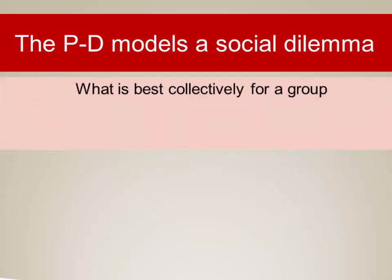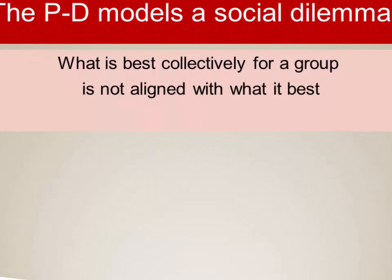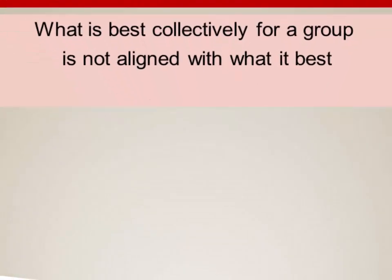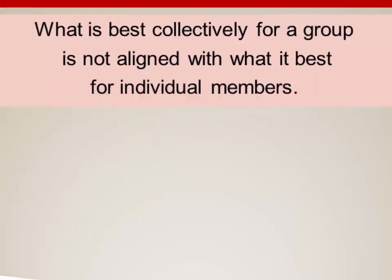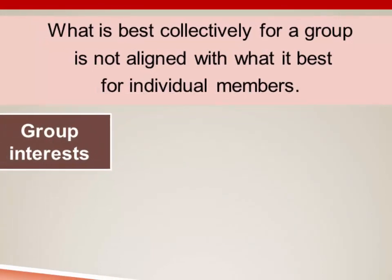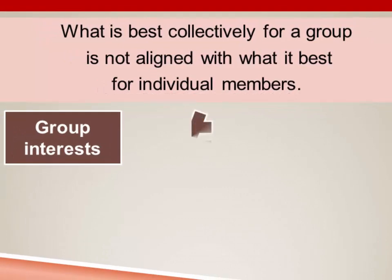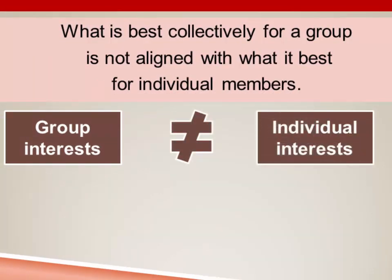We have a social dilemma whenever what is best for a group as a whole is not aligned with what is best for its individual members. In a social dilemma, group interests do not coincide with individual interests — and this is what the Prisoner's Dilemma is about.